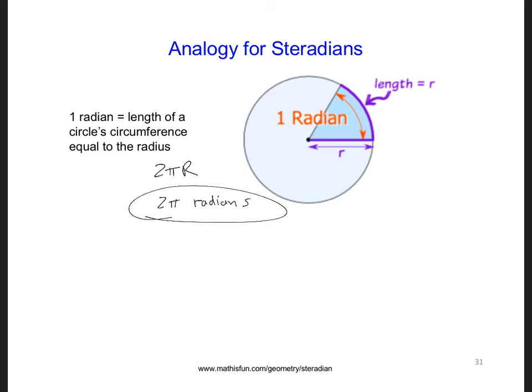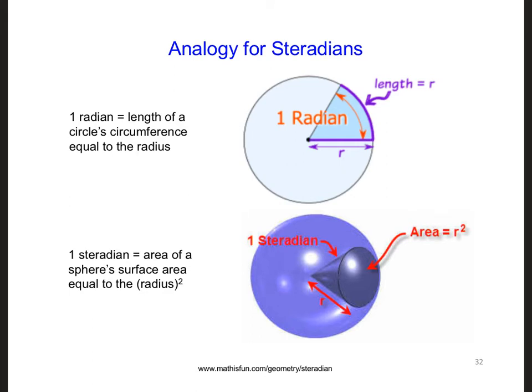This number is independent of r, the radius of the circle. Now for steradians, what is the surface area of a sphere? Here, the surface area is 4πr², units of meters squared. In units of solid angle, the area, that's omega,